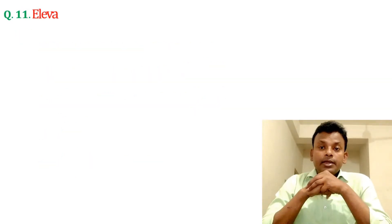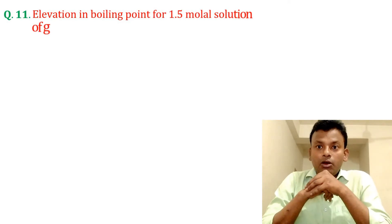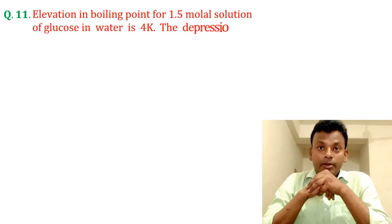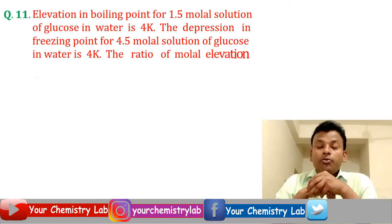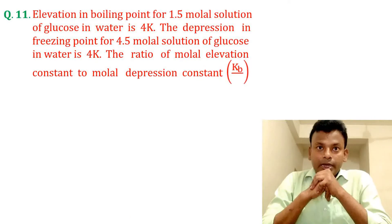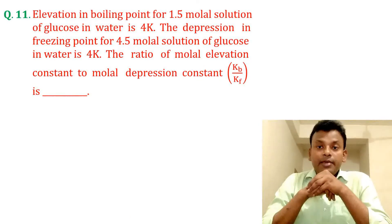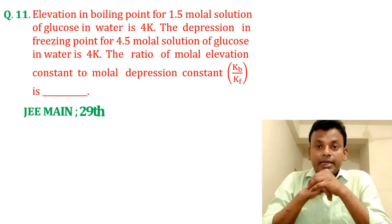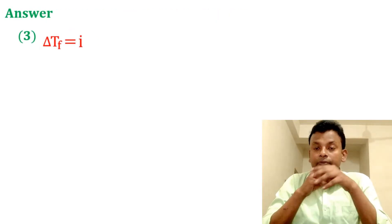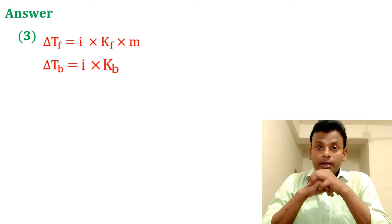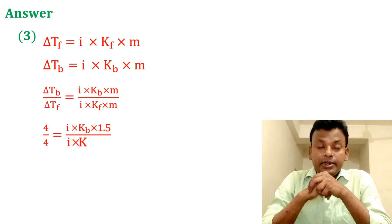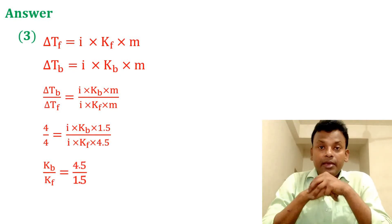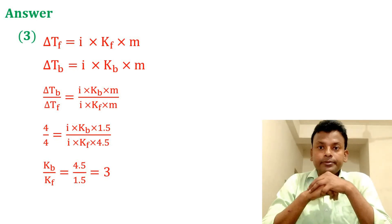Question 11: Elevation in boiling point for a 1.5 molal solution of glucose in water is 4 Kelvin. The depression in freezing point for a 4.5 molal solution of glucose in water is 4 Kelvin. The ratio of molar elevation constant to molar depression constant, K_b/K_f, is dash. This question was set in JEE Main 29th June 2022 evening shift. Answer is 3. Using ΔT_b = i × K_b × m and ΔT_f = i × K_f × m, taking the ratio and putting all values, K_b/K_f = 3. Answer is 3.